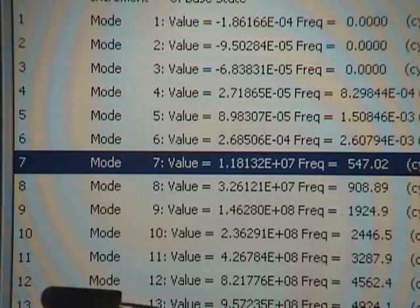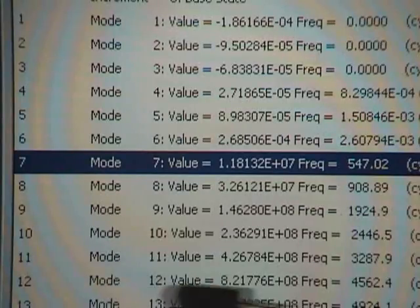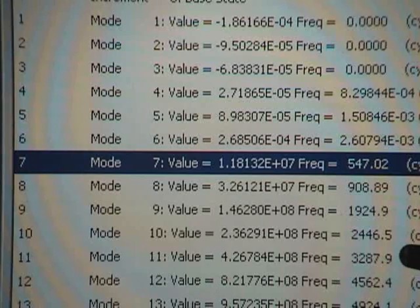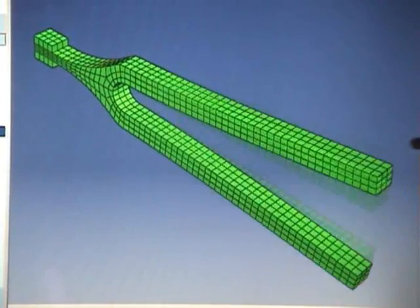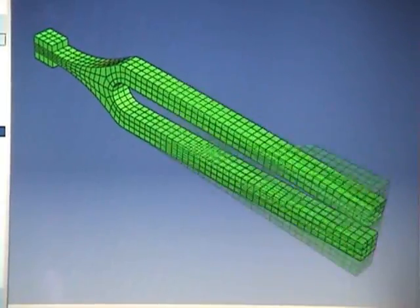The higher frequency that we hear in the tuning fork is mode 11, which is vibrating at 3288. This is the first or fundamental mode which corresponds to the frequency that we hear of the tuning fork.